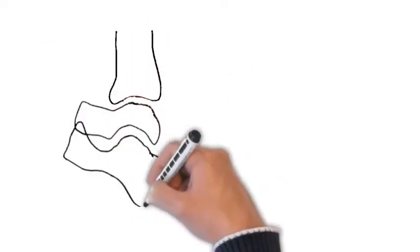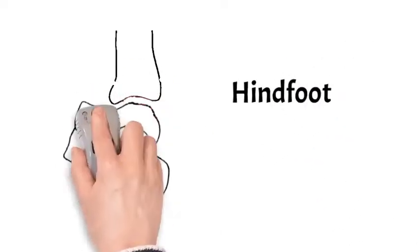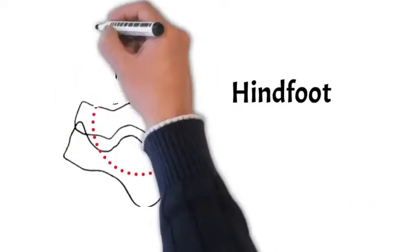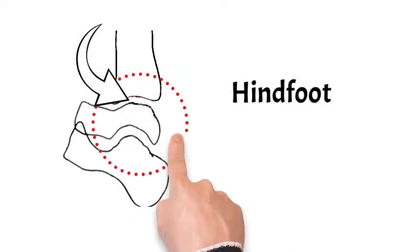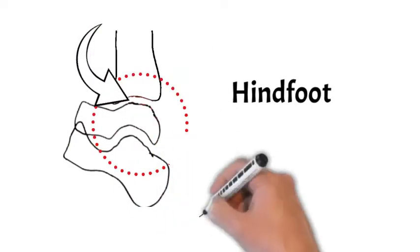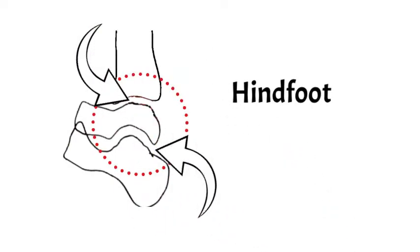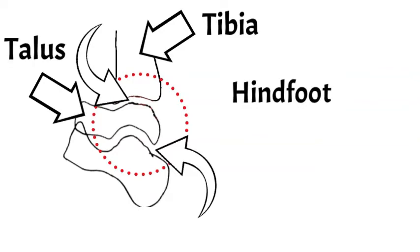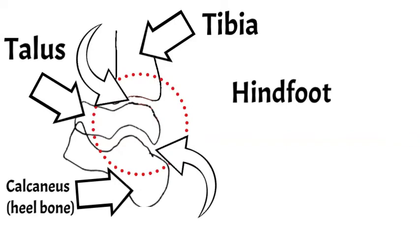An example of a hindfoot operation included in the study involves operations around the ankle or around what's called the subtalar joint, just marked below. It usually involves bones such as the tibia, the talus, or the calcaneus, otherwise known as the heel bone. That picture is looking at the ankle from the side position.